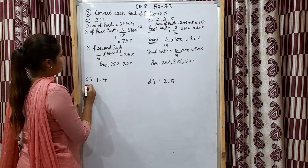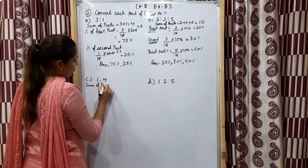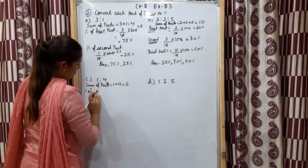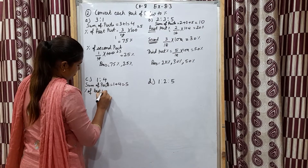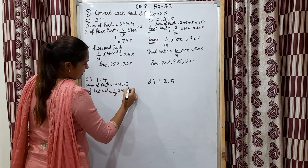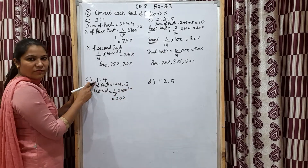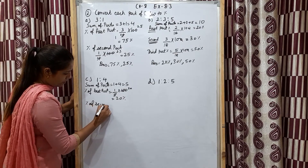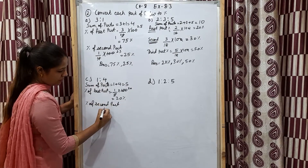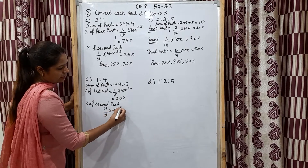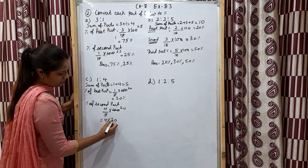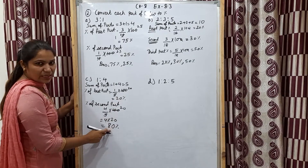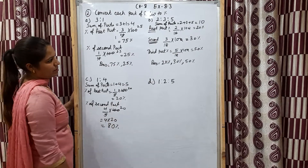Now C part: ratio 1:4. Sum of parts: 1 plus 4 equals 5. Percentage of first part: 1 upon 5 multiplied by 100, cancel, gives 20 percent. Percentage of second part: 4 upon 5 multiplied by 100, cancel, 4 into 20 equals 80 percent. Check: 20 plus 80 equals 100. Answer: 20 percent and 80 percent.